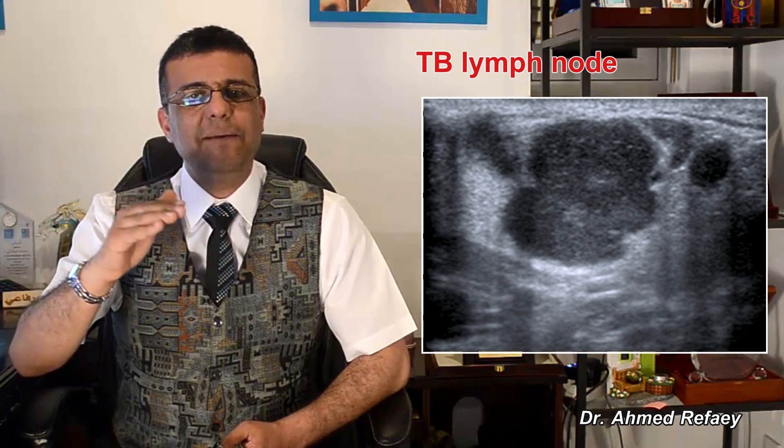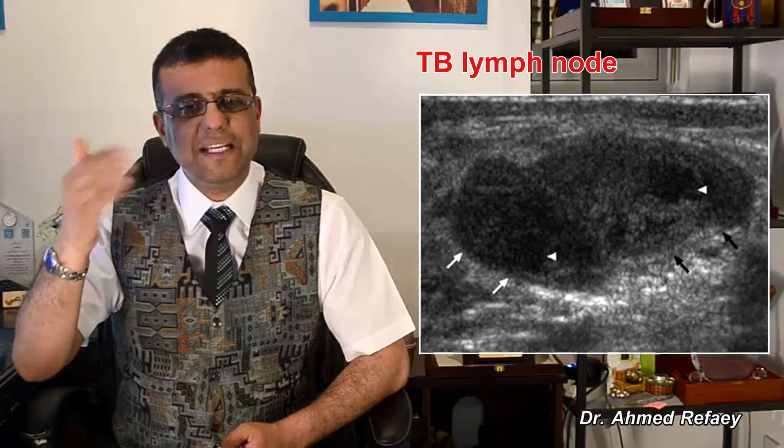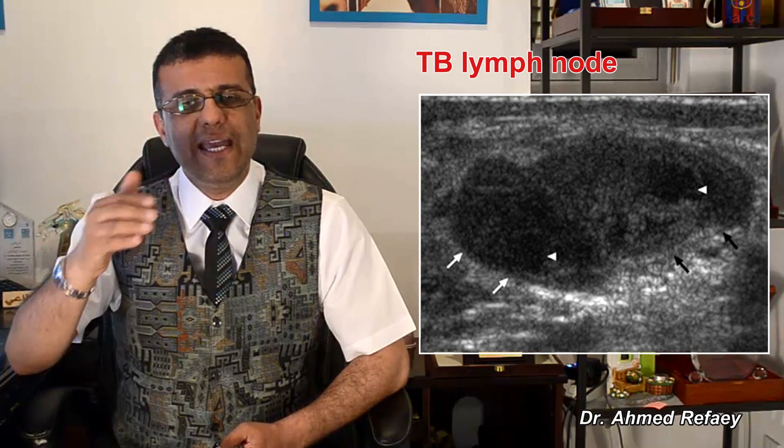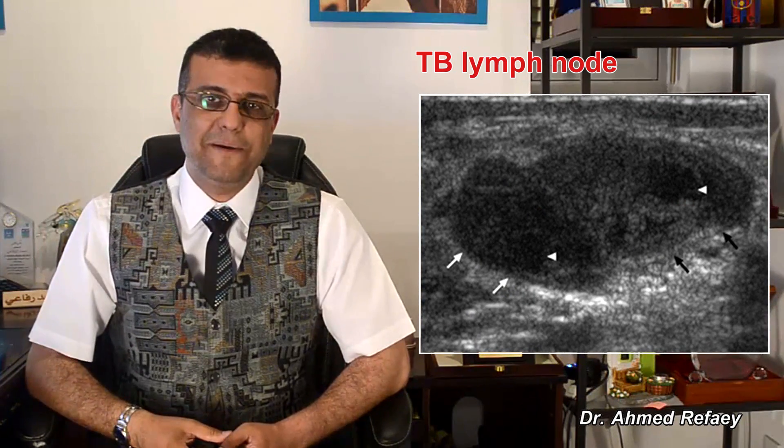On color Doppler and spectral Doppler study, the vascular distribution of tuberculous lymph nodes is varied and sometimes simulates benign lymph nodes and sometimes looks like malignant lymph nodes.